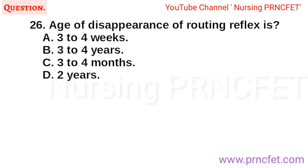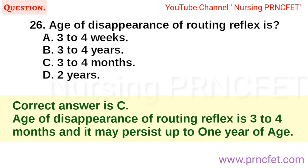Question 26: Age of disappearance of rooting reflex? A. 3-4 weeks. B. 3-4 years. C. 3-4 months. D. 2 years. Correct answer is C. Age of disappearance of rooting reflex is 3-4 months and it may persist up to 1 year of age.